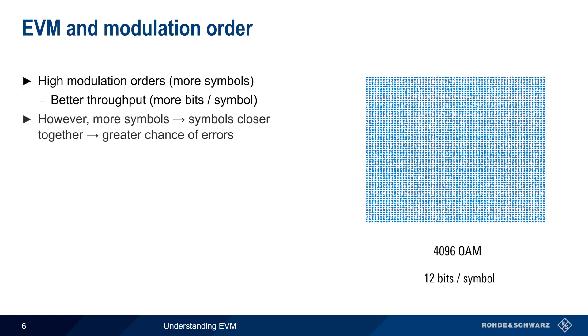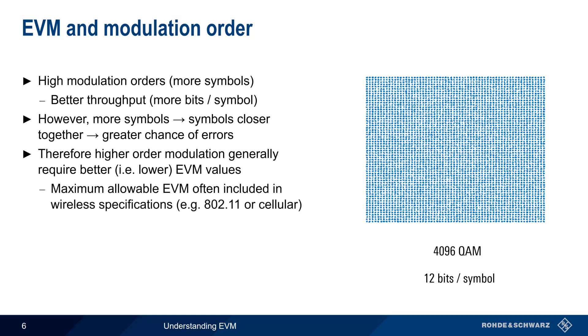However, as the number of symbols increases, the symbols become closer together, and this increases the chance of mistaking one symbol for another. Therefore, higher modulation orders generally require better or lower EVM values. In fact, the maximum allowable EVM is often included in various wireless specifications, for example, cellular or 802.11 Wi-Fi standards. And in these specifications, maximum EVM is given as a function of modulation order encoding, with stricter EVM requirements as modulation order increases.